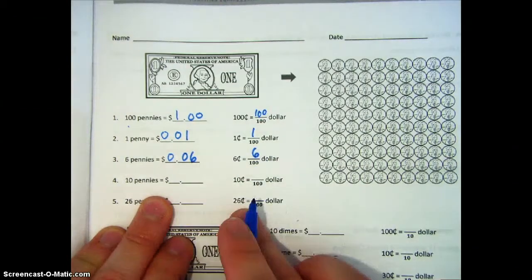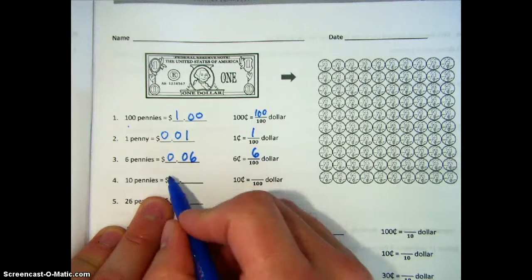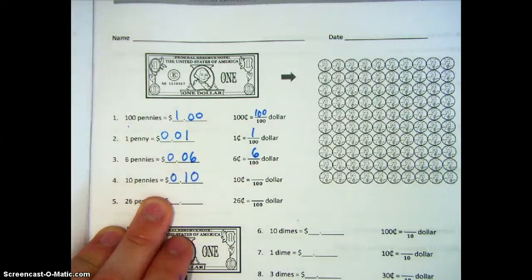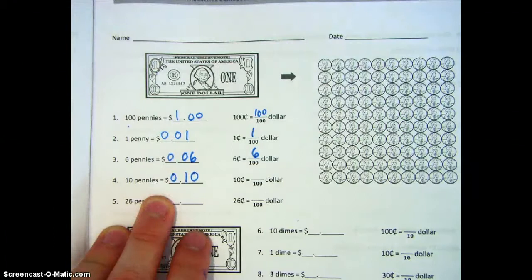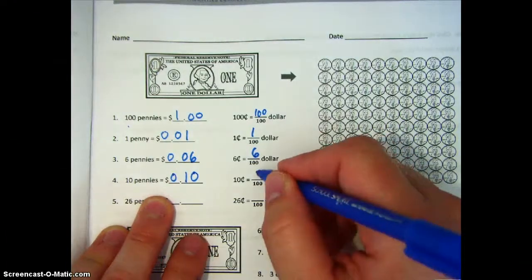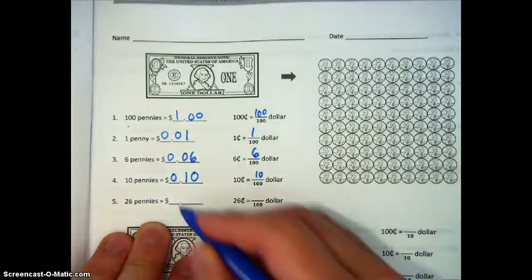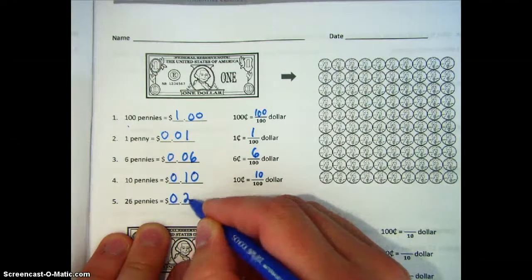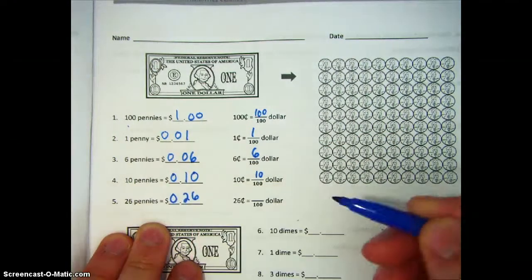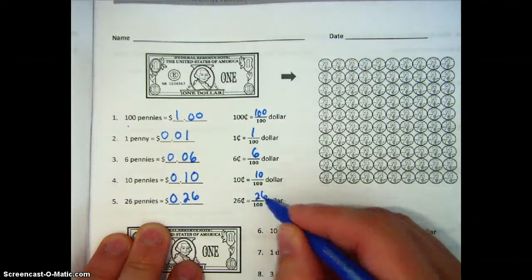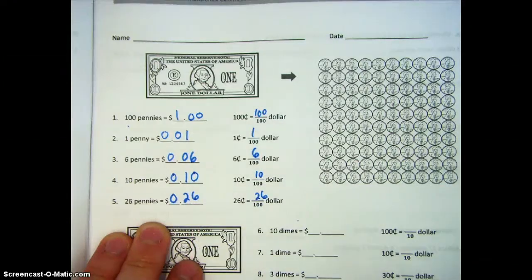Ten pennies, or one dime, is one tenth of a dollar, or ten hundredths of a dollar. Twenty-six pennies would be 26 cents, or 26 hundredths of a dollar.